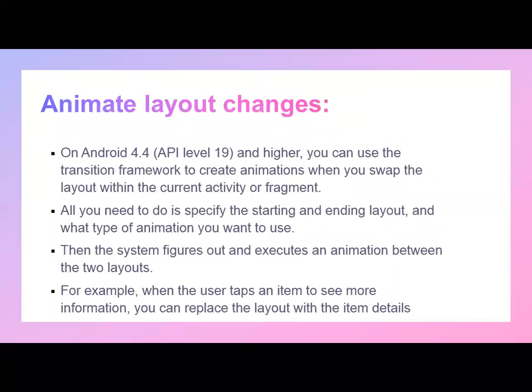Next is animation in layout changes. On Android 4.4 or API level 19 and higher, you can use the transition framework to create animations when you swap the layout within the current activity or fragment. All you need to do is specify the starting and ending layout and what type of animation you want. The system then figures out and executes an animation between the two layouts. For example, when a user taps an item to see more information, you can replace the layout with the item details.